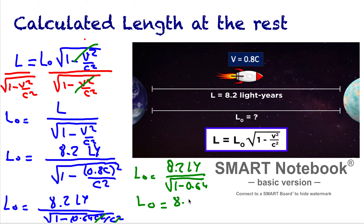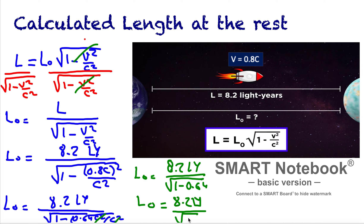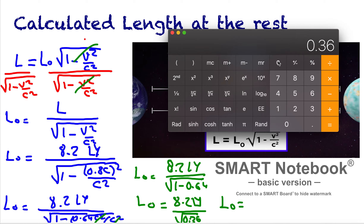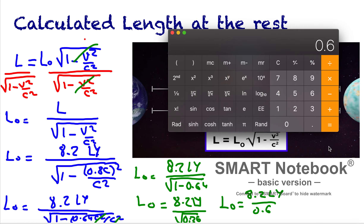1 minus 0.64 equals 0.36, so L0 = 8.2 light years divided by the square root of 0.36. Taking the square root of 0.36 gives 0.6, so we have 8.2 light years divided by 0.6.